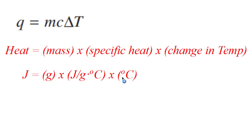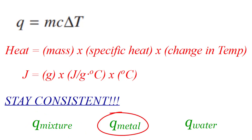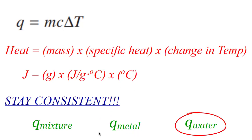Specific heat capacity describes how much energy a substance will absorb or release depending on its mass and change in temperature. With Q = mcΔT, stay consistent: if you're finding the heat of a mixture, use the mass of the mixture, the specific heat of the mixture — which is usually water, since aqueous mixtures are largely water — and the change in temperature of the mixture. If you have the heat of a metal, use the mass, specific heat, and temperature change of the metal. For water alone, use the mass, specific heat, and temperature change of the water.